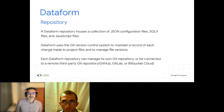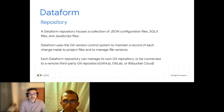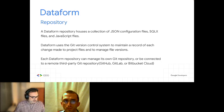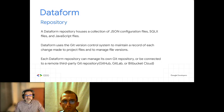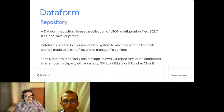Let's dive deeper into how Dataform works and what its main components are. A Dataform repository houses a collection of JSON configuration files and JavaScript files. Dataform uses a Git version control system to maintain a record of each change to the project and manage file versions. Each repository can manage its own Git repository or be connected to a remote third-party repository — currently GitHub, GitLab, and Bitbucket Cloud are supported.